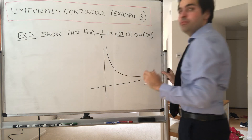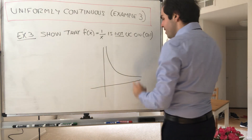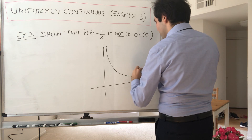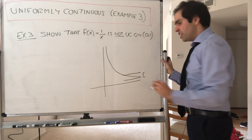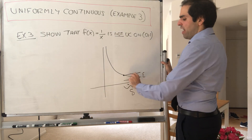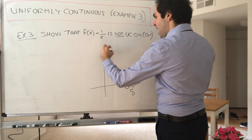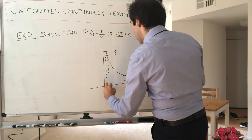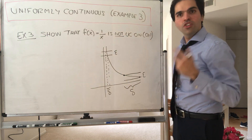Uniform continuity means the delta doesn't depend on where you're at — you can choose the same delta no matter which position you are in. However, this is not true for this function. Suppose we want epsilon to be very small. If you're closer to 1, then delta can actually be very big. But if you're closer to 0, then to make |f(x) - f(y)| less than epsilon, delta has to be extremely small. So you cannot choose the same delta to work everywhere — that's why the function is not uniformly continuous.